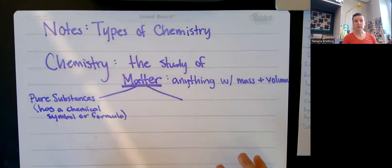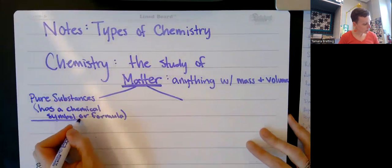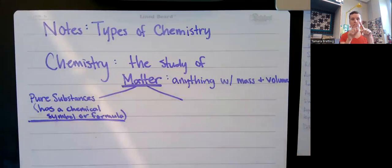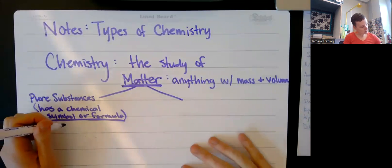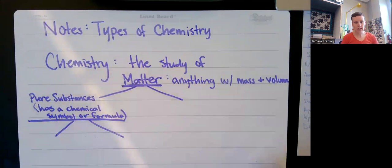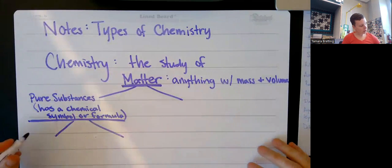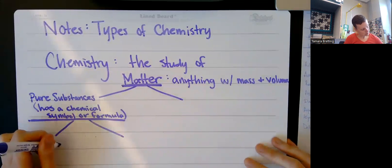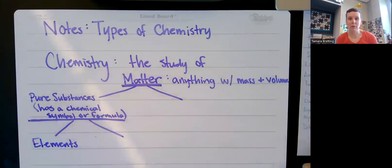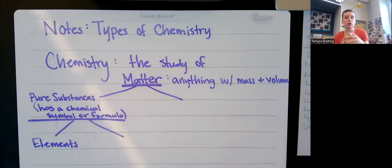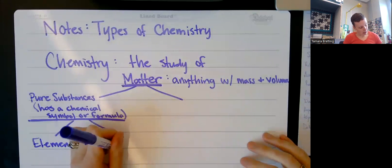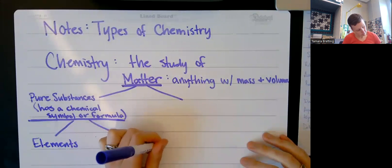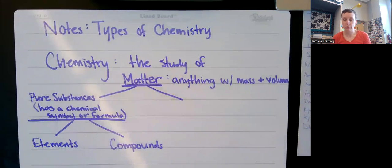Pure substances can be split into two subcategories. It can have a symbol or a formula — that might help you remember what two things fall into pure substances. The things that have only a symbol are going to be elements — 118 of them up on the periodic table. The other type of pure substance is when you take multiple elements and bond them together to make a new chemical. Those are compounds. Elements and compounds are the two categories of pure substances.